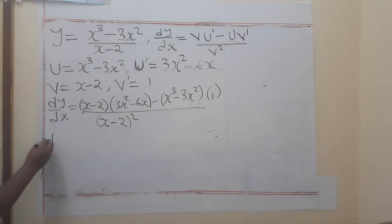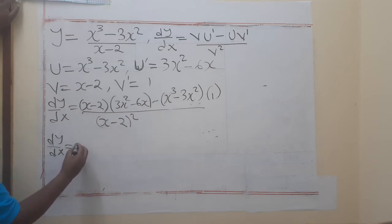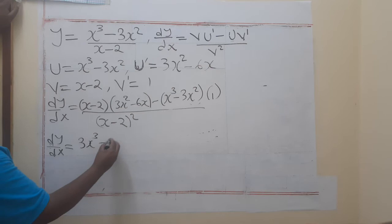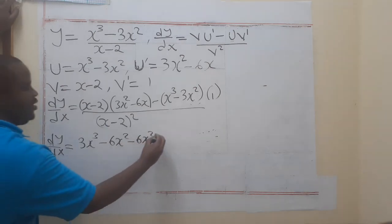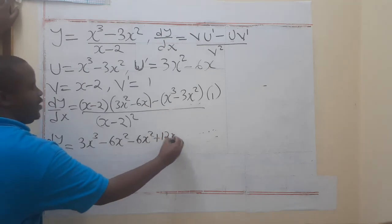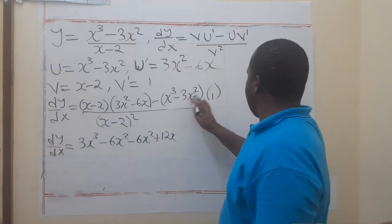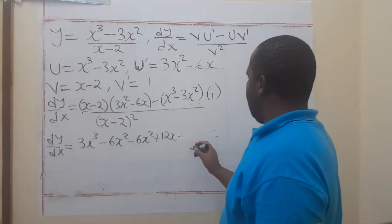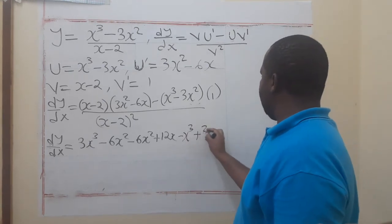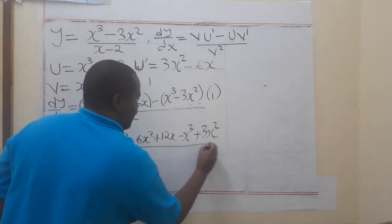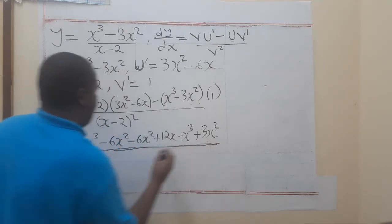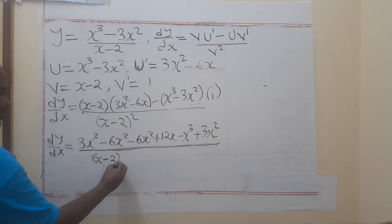So now we say dy/dx is equal to - here we have, when you say x by 3x squared, we have 3x to the power 3 minus 6x squared. Then minus 6x squared plus 12x. Here when you multiply by 1, it will be that. So here we say minus x to the power 3 plus 3x squared. We divide everything by x minus 2 to the power 2.